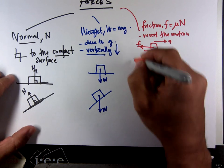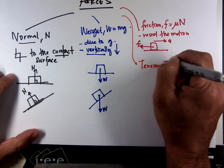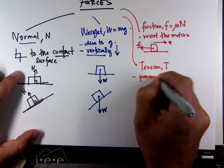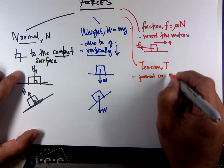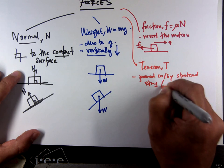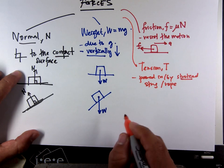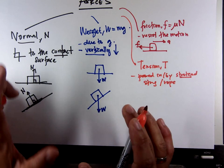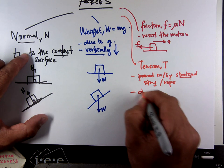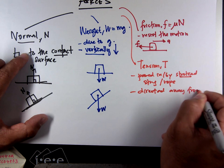One more we have is tension. Tension is force that pulls in or by a stretched string or rope or anything. Again, we have stretch. If it's not stretched, we don't have tension. Tension is always directed away from the object.